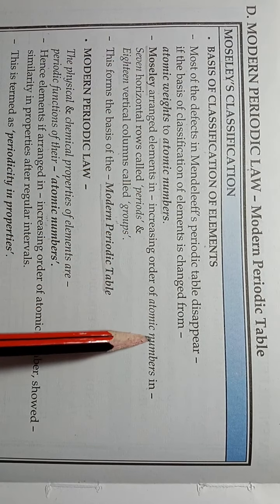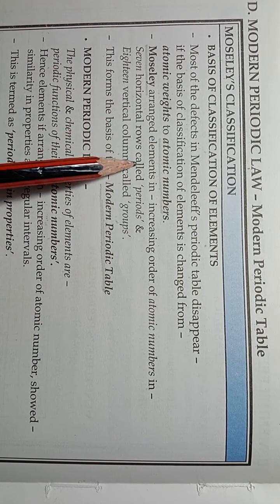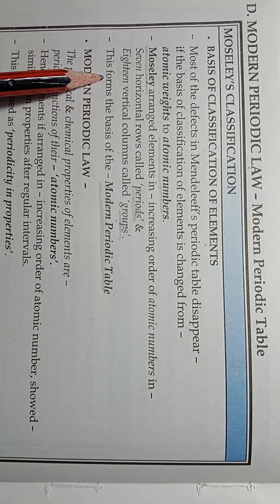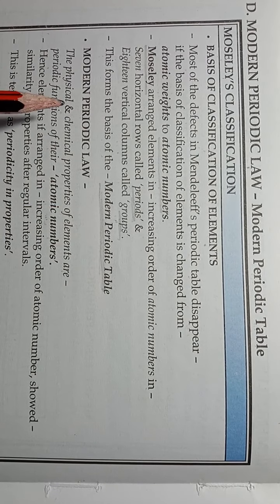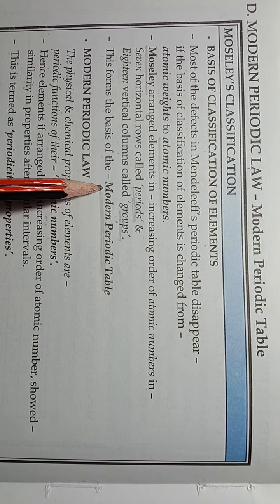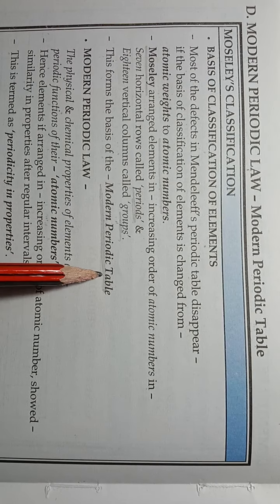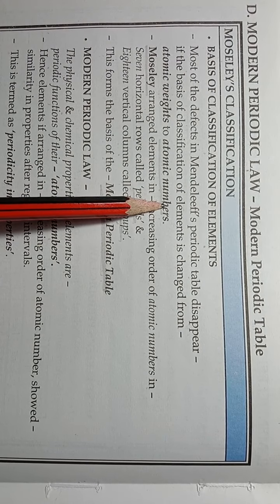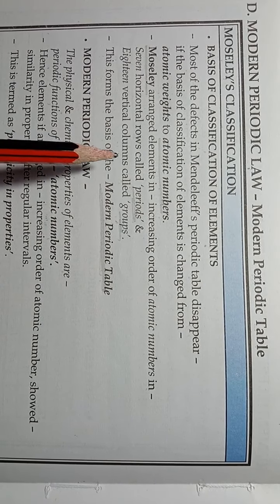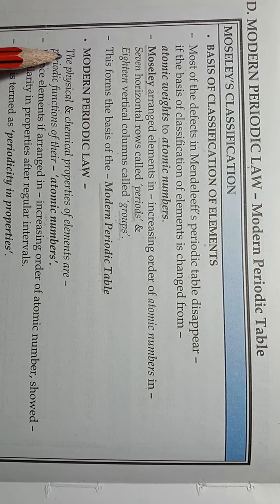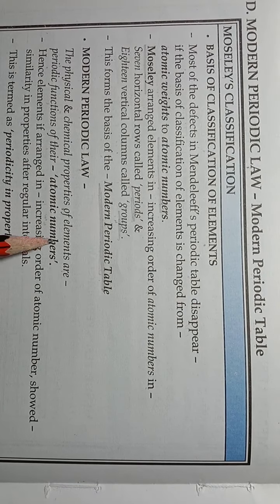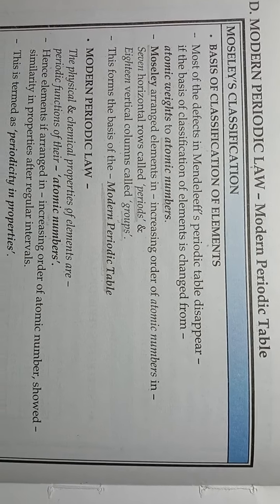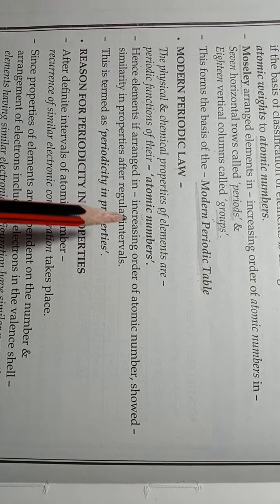Moseley arranged elements in increasing order of atomic numbers in seven horizontal rows called periods and 18 vertical columns called groups. This forms the basis of the modern periodic table. In the modern periodic table, elements are arranged in the increasing order of their atomic numbers. The modern periodic law states that the physical and chemical properties of elements are periodic functions of their atomic numbers.